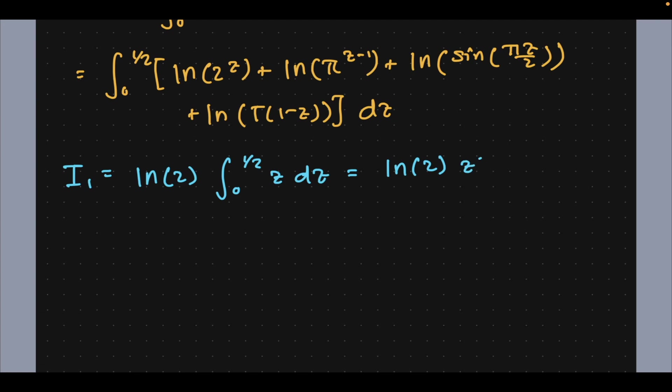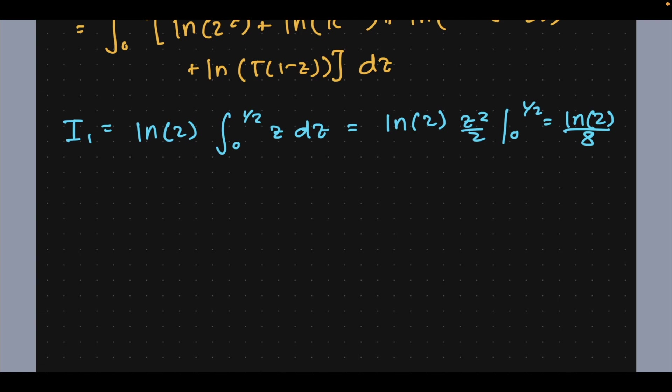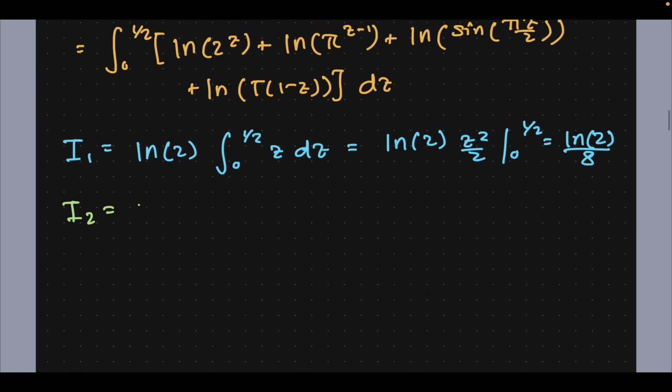Or rather, if you don't want me to skip any steps, z squared over 2 from 0 to 1/2 gives natural log of 2 over 8. With the same spirit, we can evaluate what I2 is going to be.